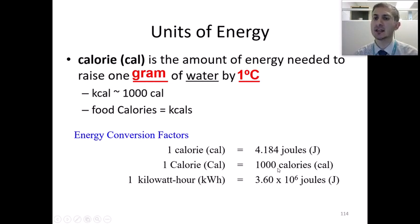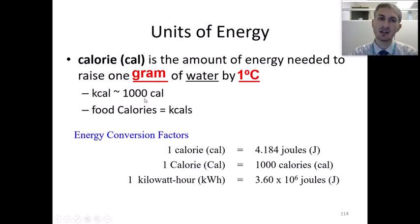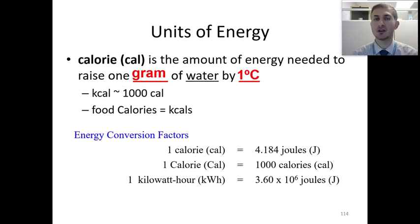In physics there are more energy units, but in chemistry we prefer to work with calories and joules. In nutrition science, we use one type of energy unit called a kilocalorie, reported as 1,000 calories — kilo means 1,000 — and written with a capital C. If you read food labels and want to know how much energy you get from one serving, the capital C on the label means 1,000 calories.